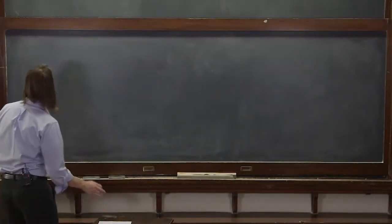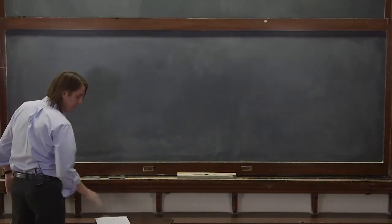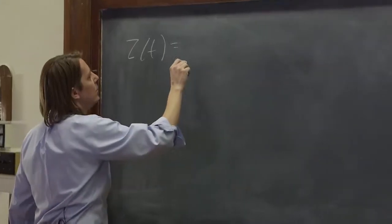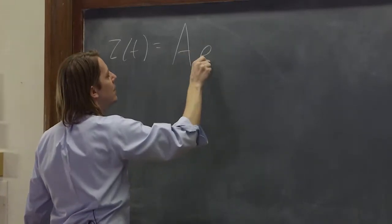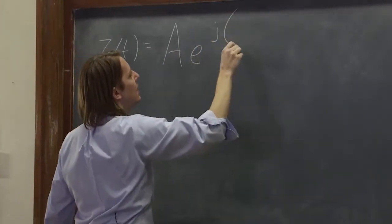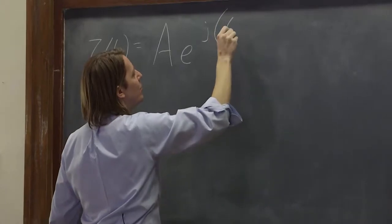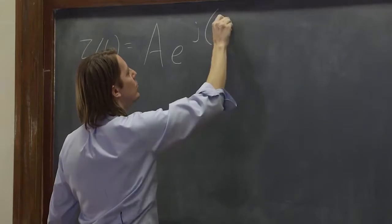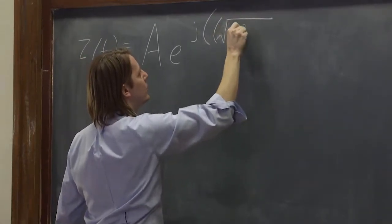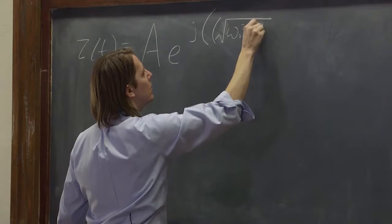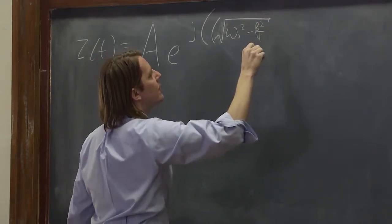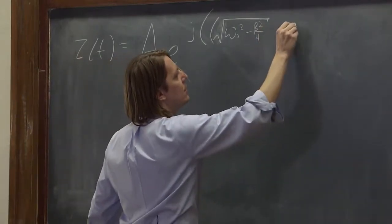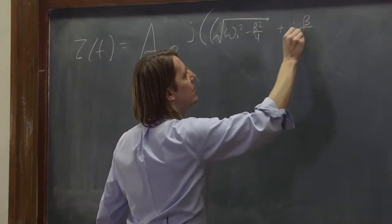Now let's have a look at this solution that we have guessed and confirmed by plugging it in. It's that Z of T was some amplitude A, E to the J, and now it had a real part which turned out to be the square root of omega naught squared minus beta squared over 4.